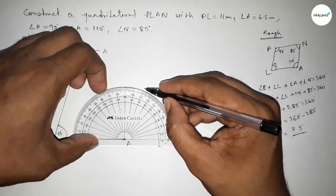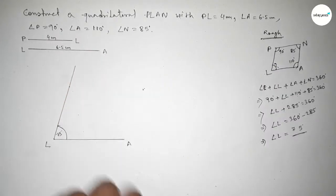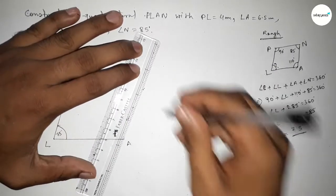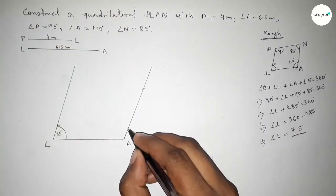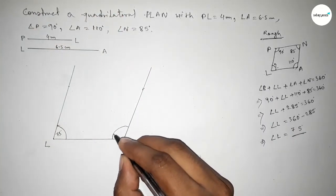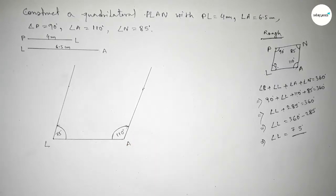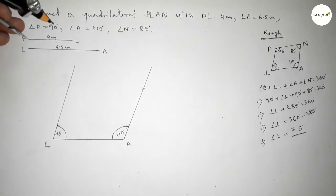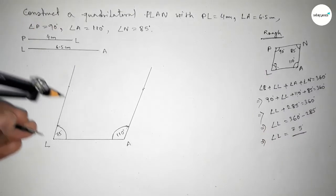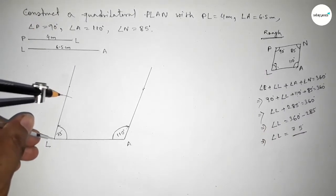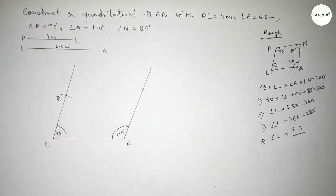Now we have to draw a 110 degree angle at point A using a protractor. Marking the 110 degree angle and joining the line to get a 110 degree angle — so this angle is 110 degrees. Next, taking the length PL equal to 4 centimeters, putting the compass on point L and cutting the arc to get point P.